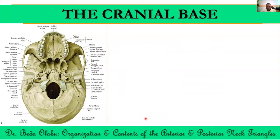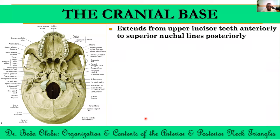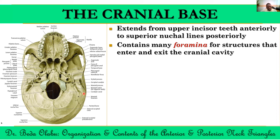Now let's talk about the anatomy of the cranial base. The cranium refers to the skull excluding the mandible. The base of the skull extends from the maxillary incisor teeth anteriorly to the posterior nuchal lines on the occipital bone posteriorly. When looking at the base of the skull, we notice quite a number of foramina discussed in previous lectures. It's important to recall these foramina when discussing the neck, because many structures we'll talk about pass through them.